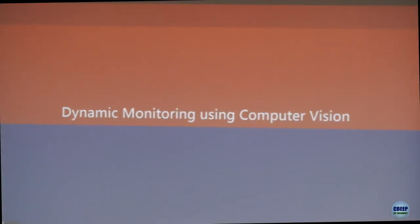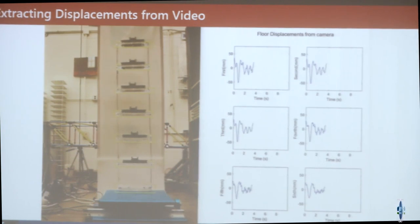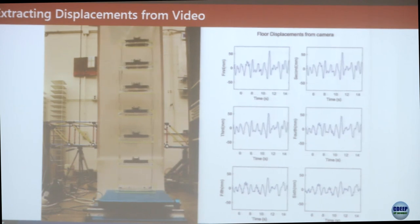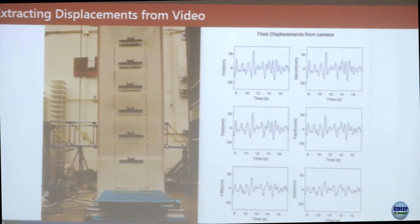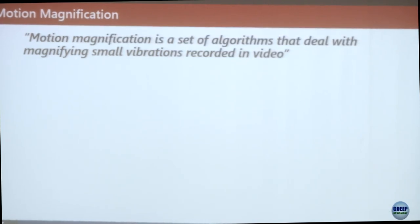Moving on to dynamic monitoring applications. In our laboratory, we vibrated a building and extracted displacements from video for each region in a target box. From those displacements we obtained the natural frequencies and mode shapes. We see very good agreement comparing a wired accelerometer at 64 Hz with the still camera we used for this work. Another very popular area that came out of MIT is motion magnification.